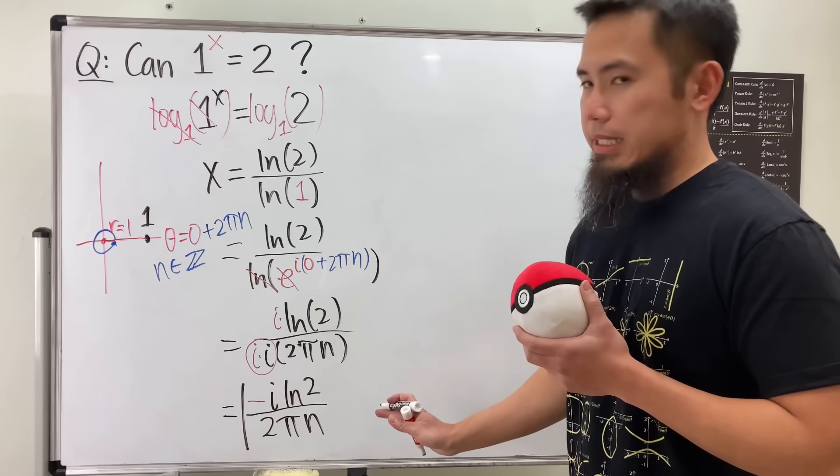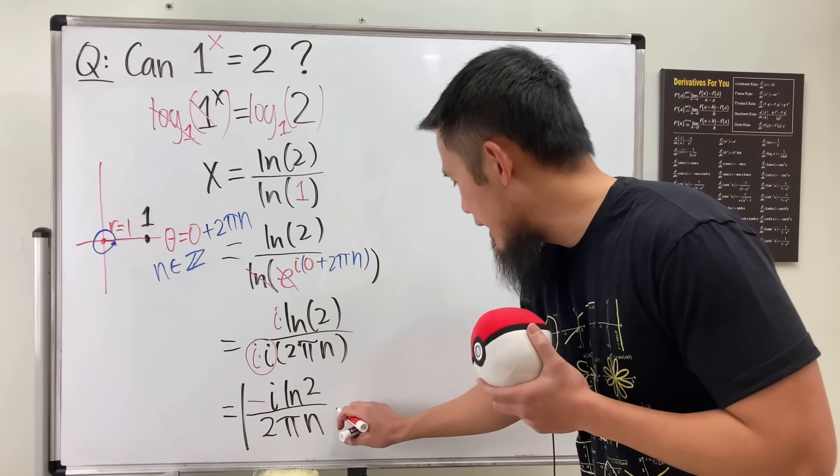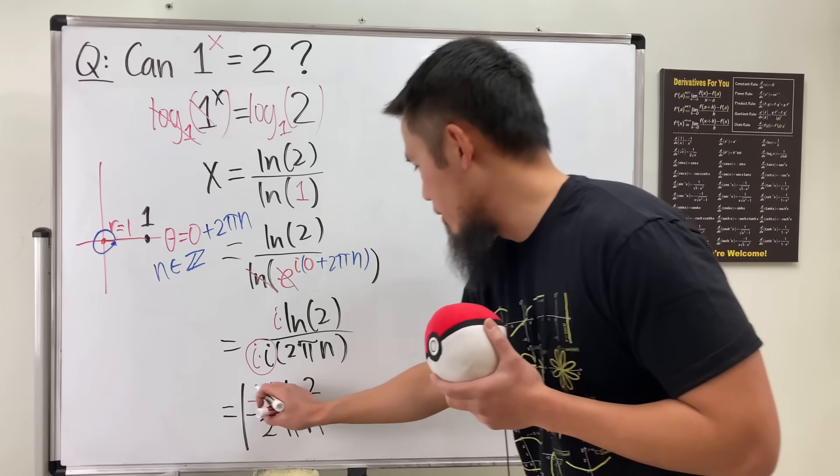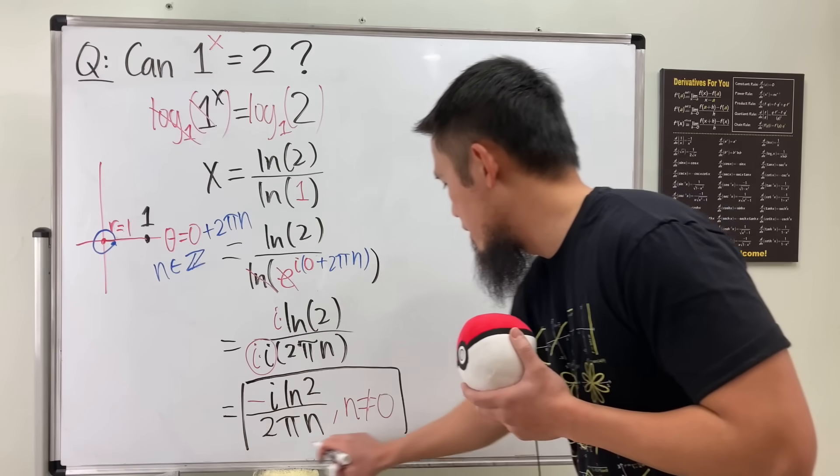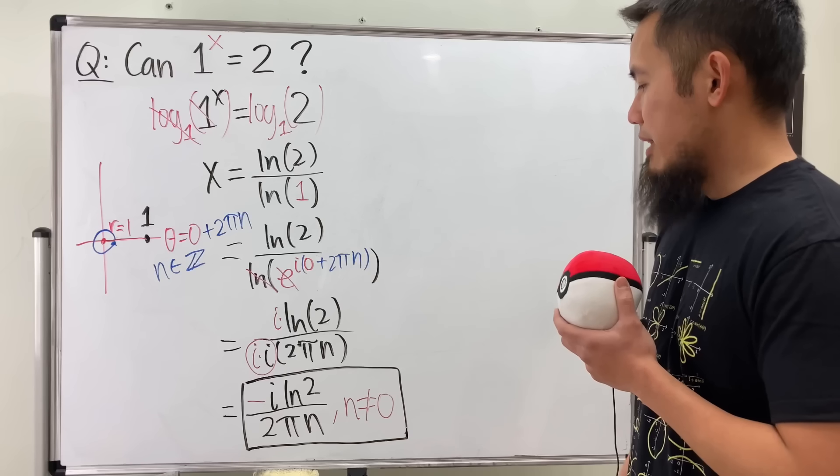And before I box this, you see the n is on the bottom, right? So you have to make sure that n cannot be equal to 0. n cannot be equal to 0. Just like that.